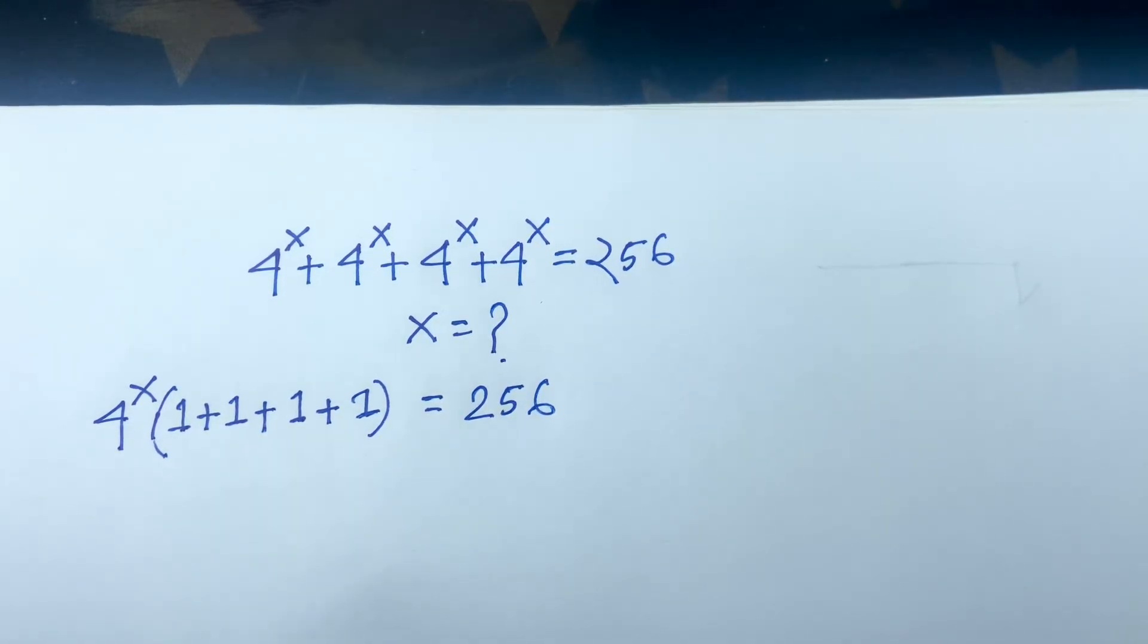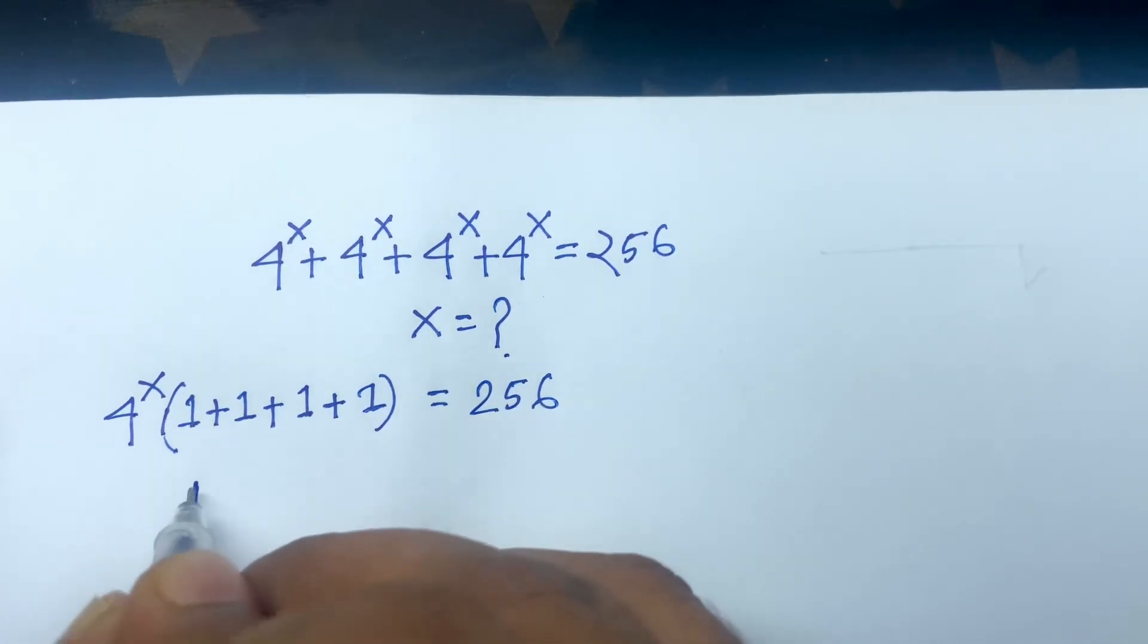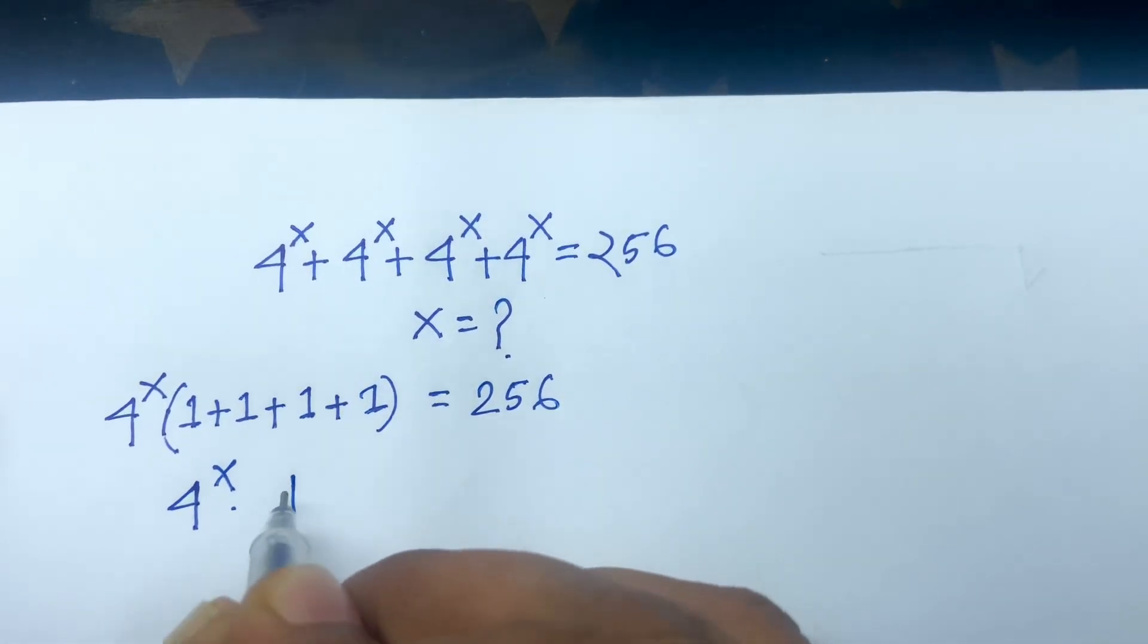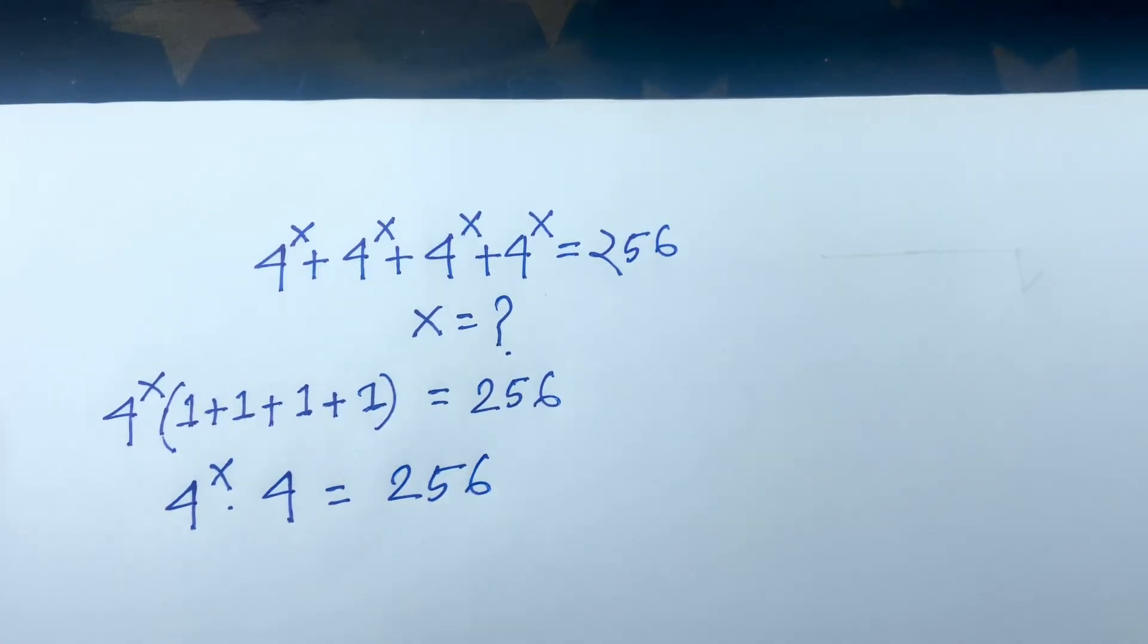In this case, we can factor out 4 to the power x. So it will be 4 to the power x times 4 equals 256, since 1 plus 1 plus 1 plus 1 equals 4.